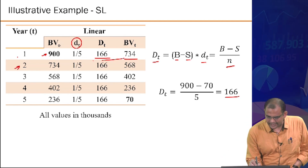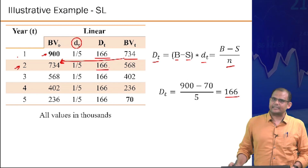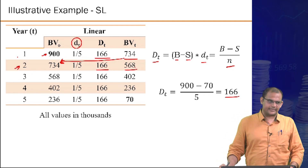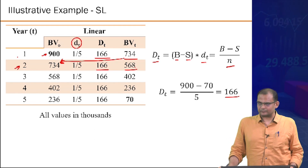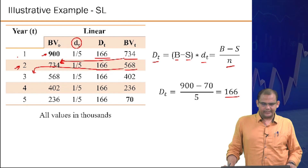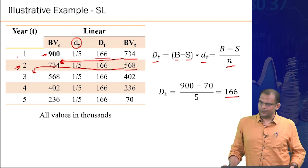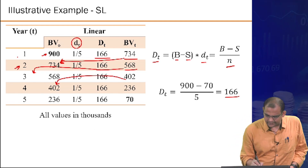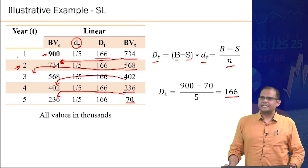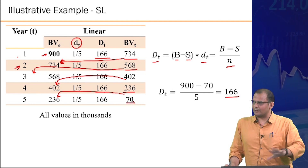Continuing linear: year 4 book value 402 minus 166 = 236. Year 5: 236 minus 166 = 70, which matches the originally anticipated salvage value. This calculation is straightforward.